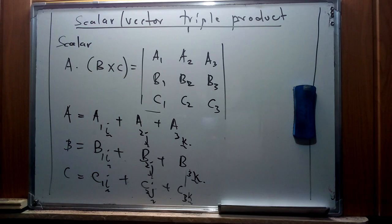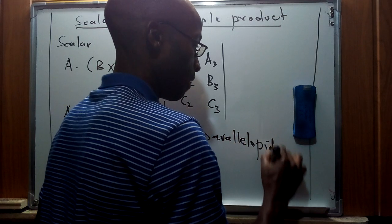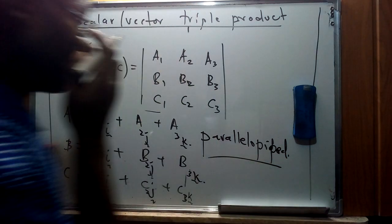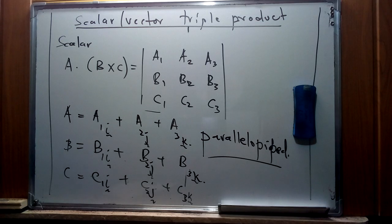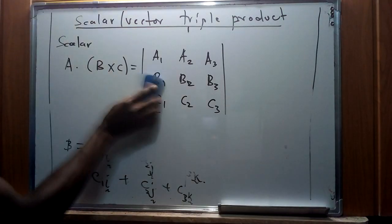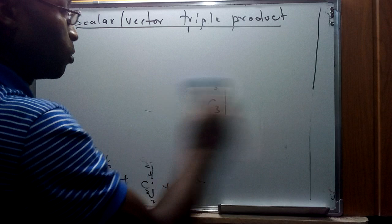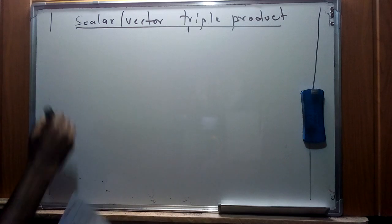The scalar triple product represents the volume of a three-dimensional figure that we refer to as a parallelepiped. I'm going to have an illustration on the board, which will assist us in finding some of the characteristics of this parallelepiped that involve the scalar triple product. We'll also look at the concept of the vector triple product before applying the scalar triple product to find the volume.